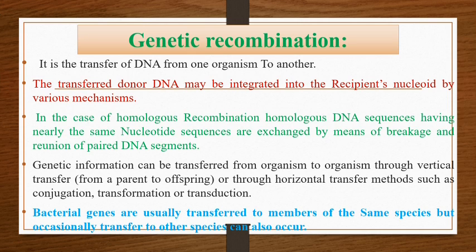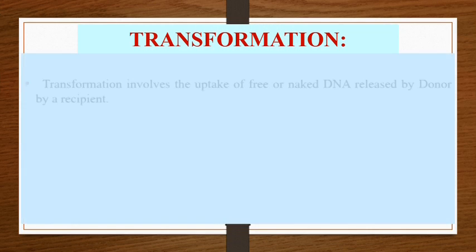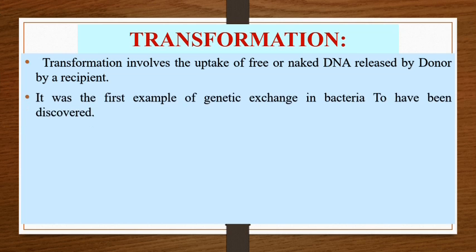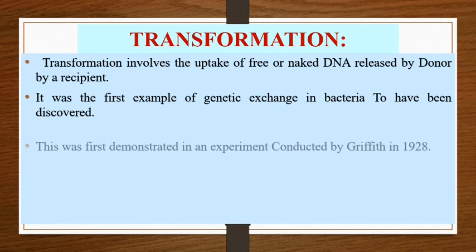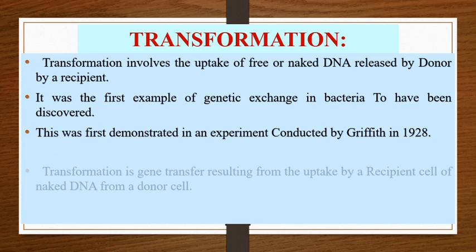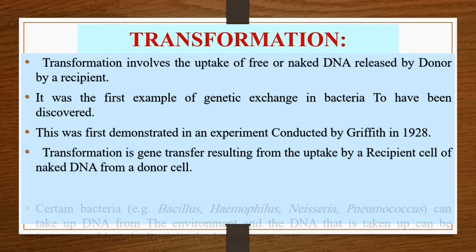Transformation involves the uptake of free or naked DNA released by a donor by a recipient. It was the first example of genetic exchange in bacteria to be discovered, first demonstrated in an experiment conducted by Professor Griffith in 1928. Transformation is gene transfer resulting from the uptake by a recipient cell of naked DNA from a donor cell.